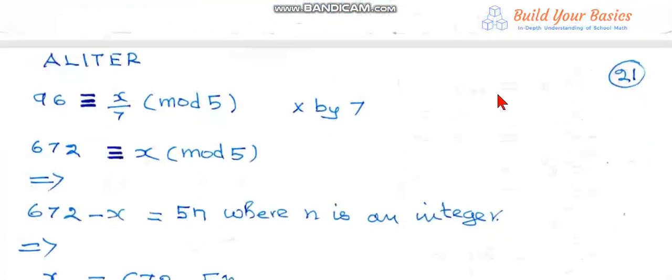The problem can also be done in a detailed fashion. Given 96 is congruent to x by 7 mod 5. To avoid the fraction, multiply both sides by 7. 96 into 7, 672 is congruent to x mod 5.